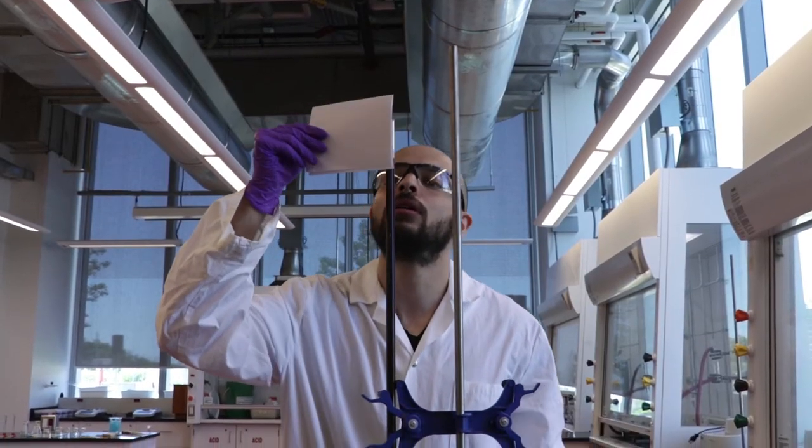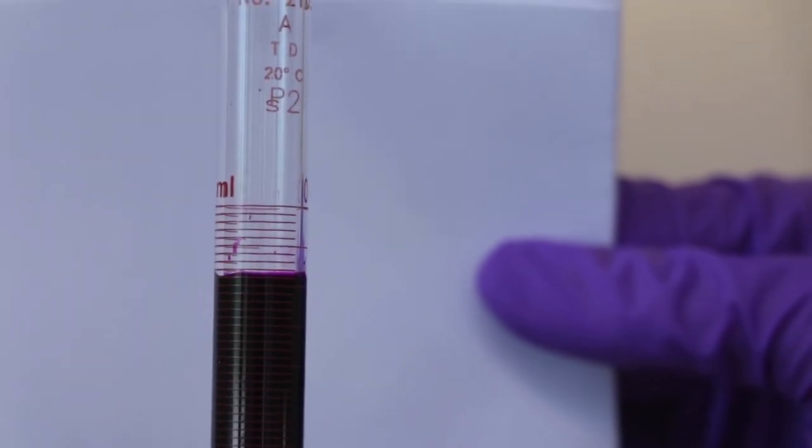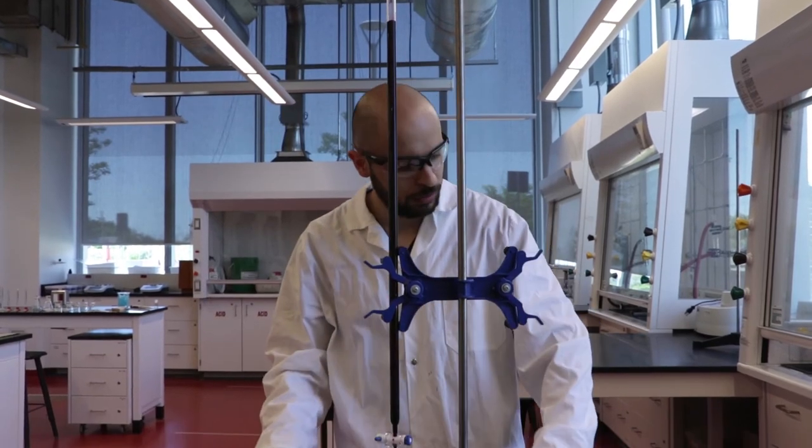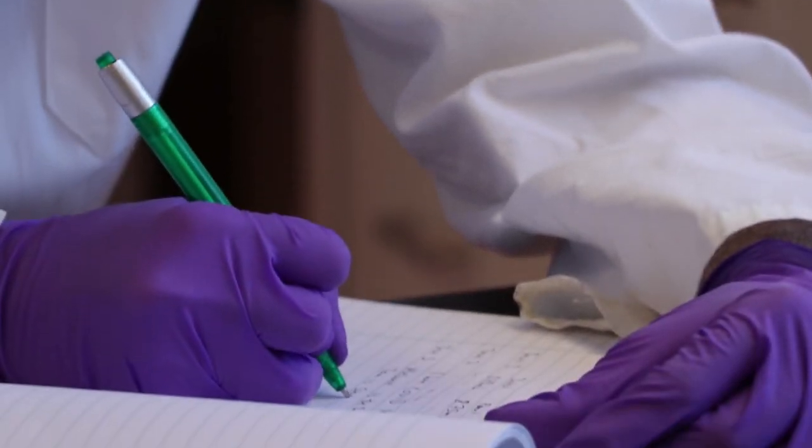You should read the meniscus at eye level, and if the reagent is too opaque, hold a white tile or sheet of paper behind the burette. Record the starting volume to two decimal places.